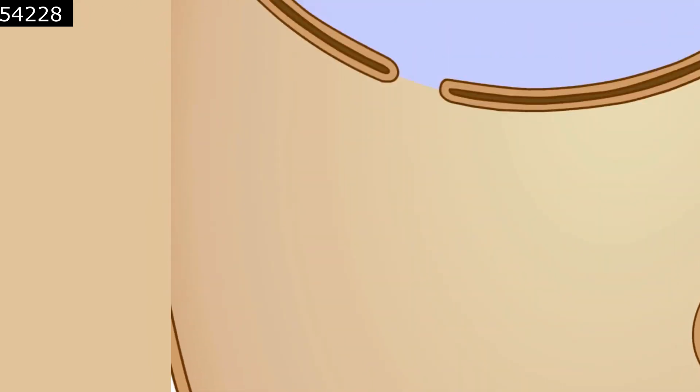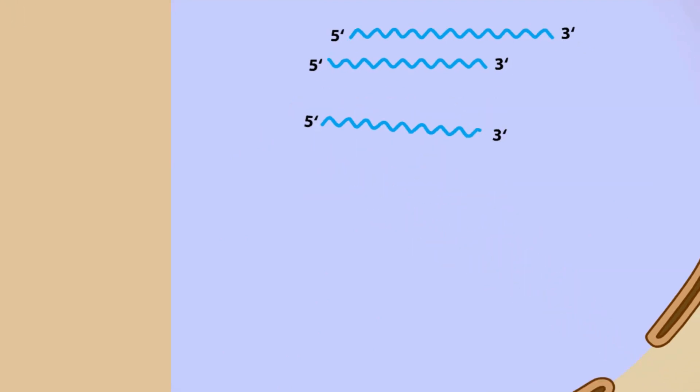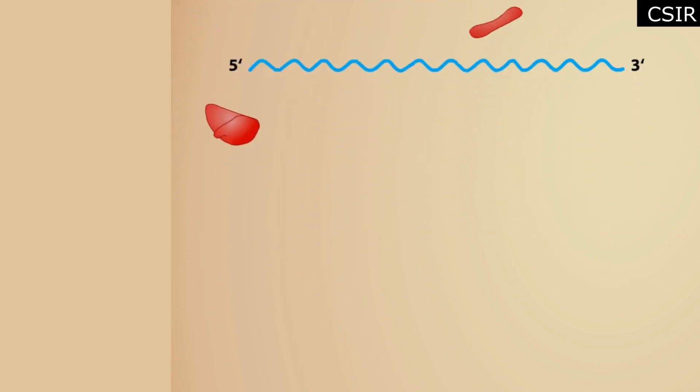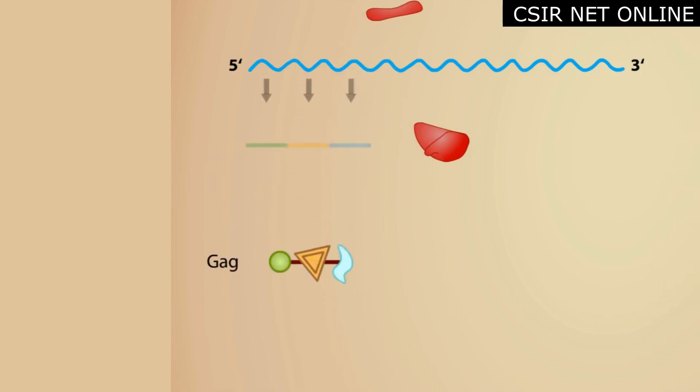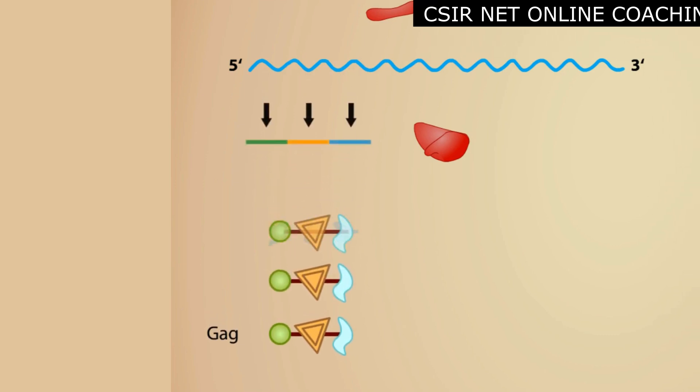When ribosomes translate the full-length viral RNA molecules, the predominant protein made is called GAG. The ribosome encounters a stop codon at the end of the GAG coding region. Termination of the translation is done. Ribosomes produce many copies of GAG proteins in this order.